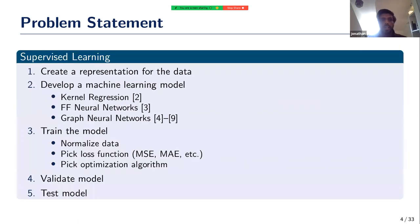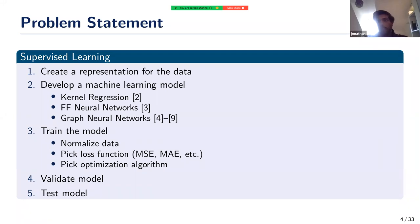Applying machine learning to this problem can be broken down into five steps. The first is to create a representation for the data — in this case a crystal structure. The second is to develop a machine learning model for crystal property prediction. There have been a variety of models, starting with traditional methods like kernel regression, moving to deep learning with feed-forward neural networks, and more recently graph neural networks, which have had the most success.